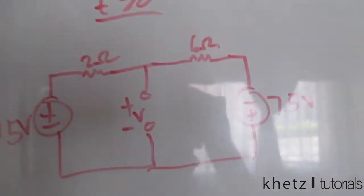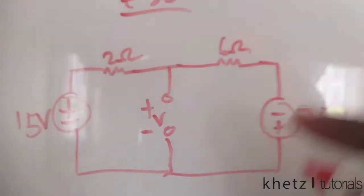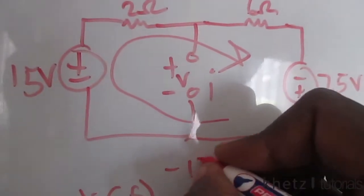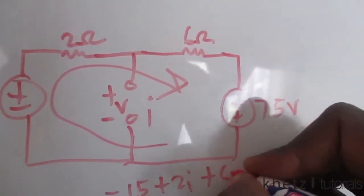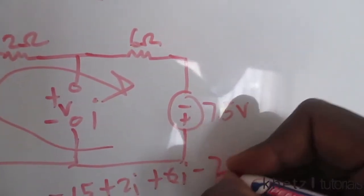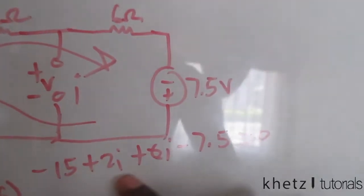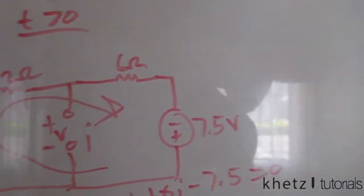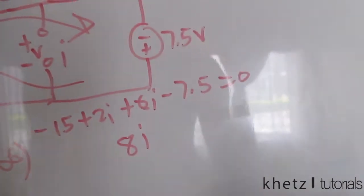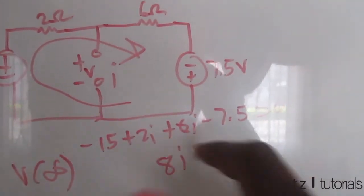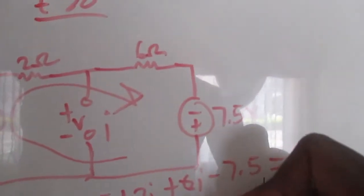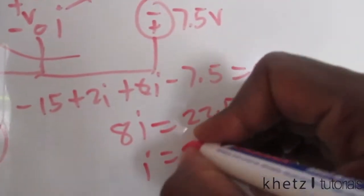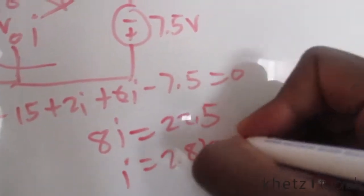To find v(∞), we label the loop current as i and apply KVL: negative 15 plus 2i plus 6i minus 7.5 equals zero. Solving, we get 22.5 on one side, and therefore the current i equals 2.8125 amperes.